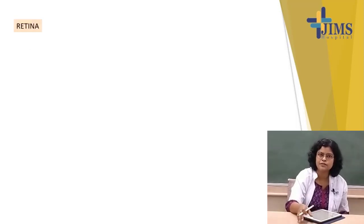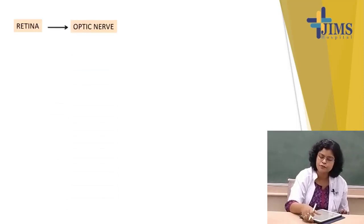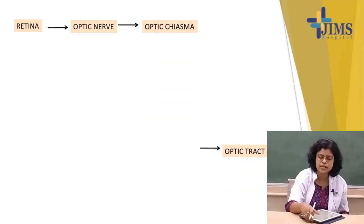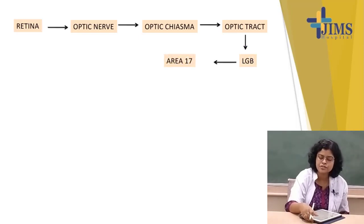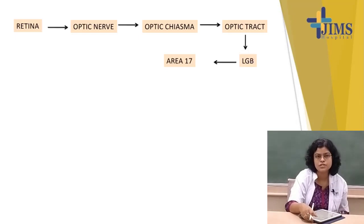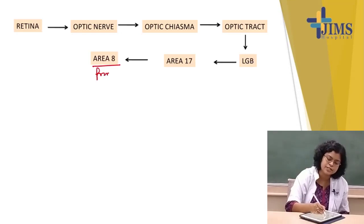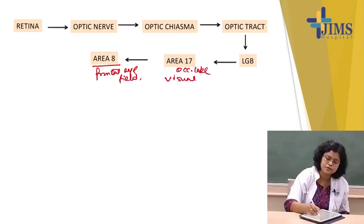Now, the pathway for accommodation reflex: again from retina, optic nerve, optic chiasma, optic tract — from there the impulse goes to the lateral geniculate body. From the lateral geniculate body, through optic radiation, the impulse reaches Area 17 of the occipital lobe, which is the primary visual cortex. From Area 17 it goes to Area 8, the frontal eye field.